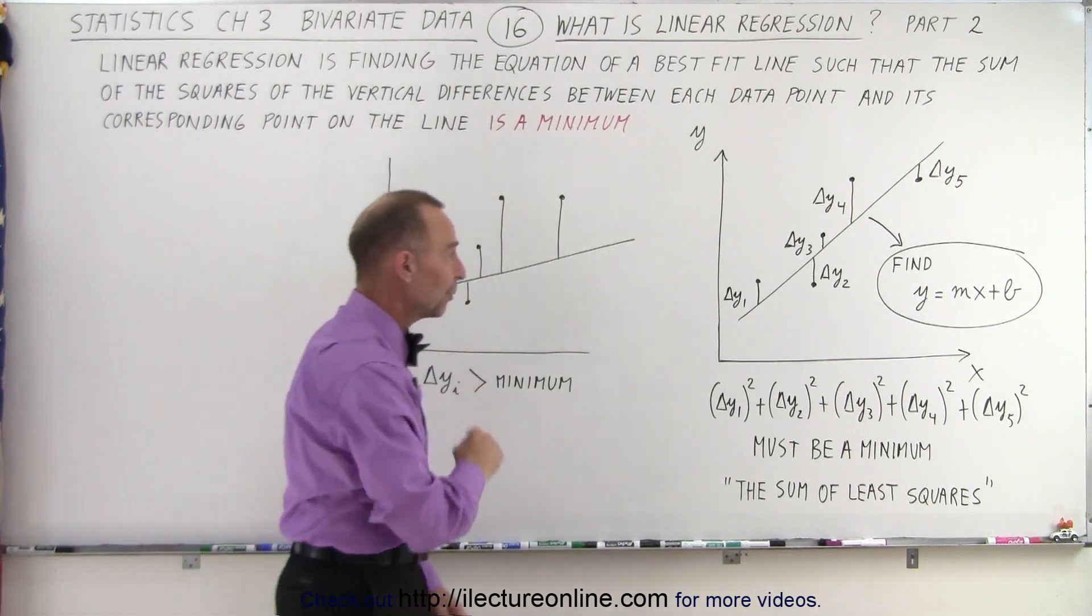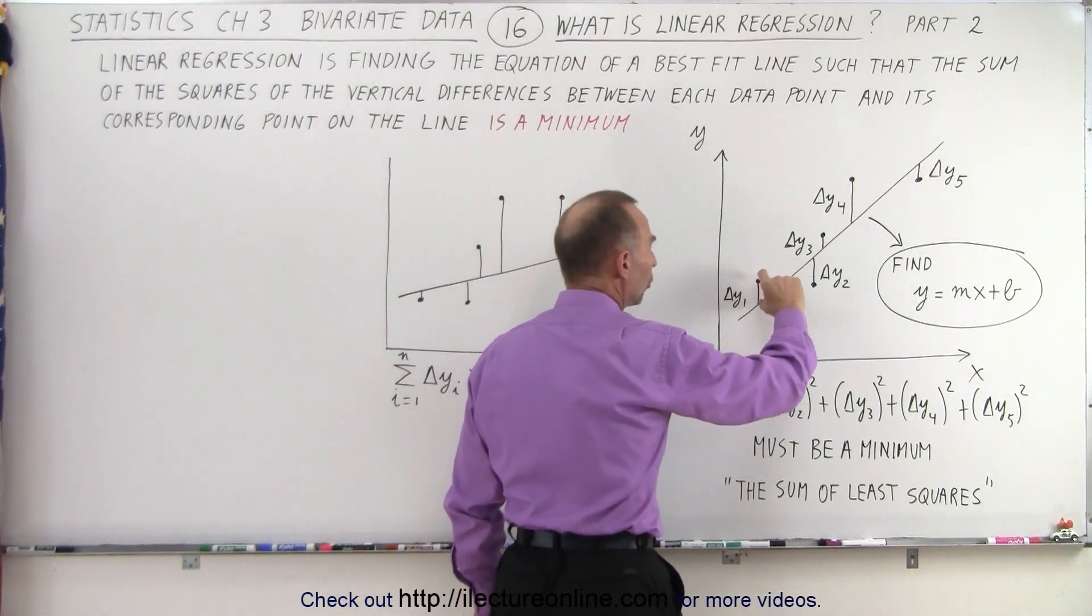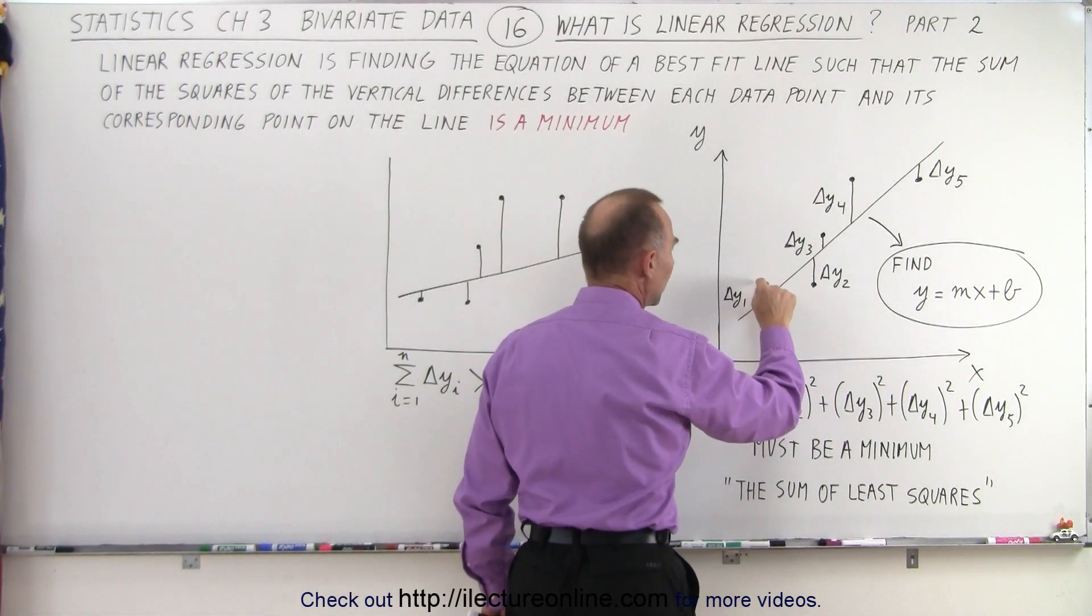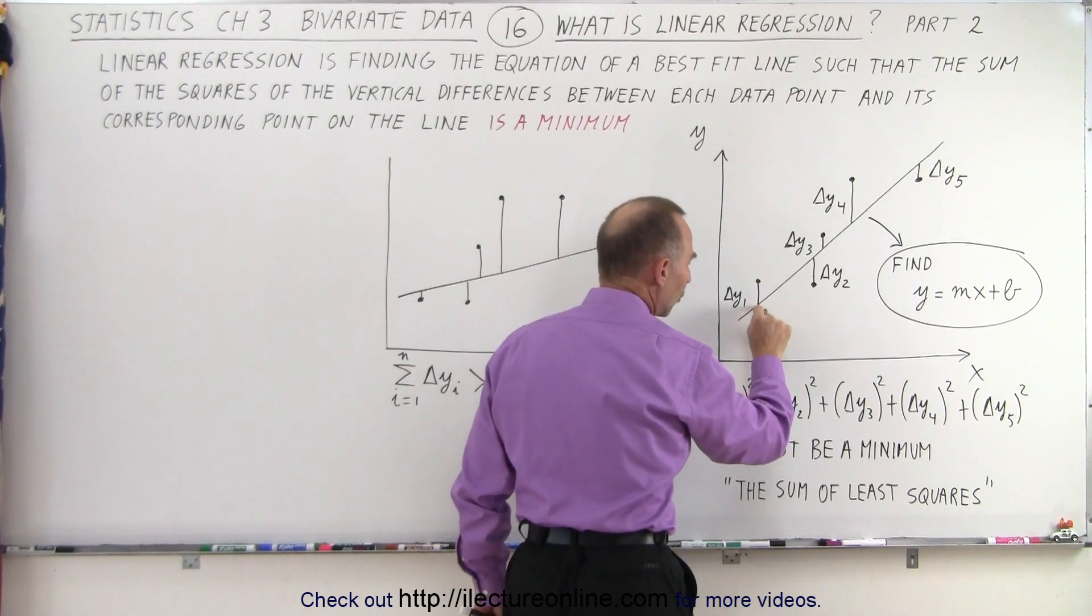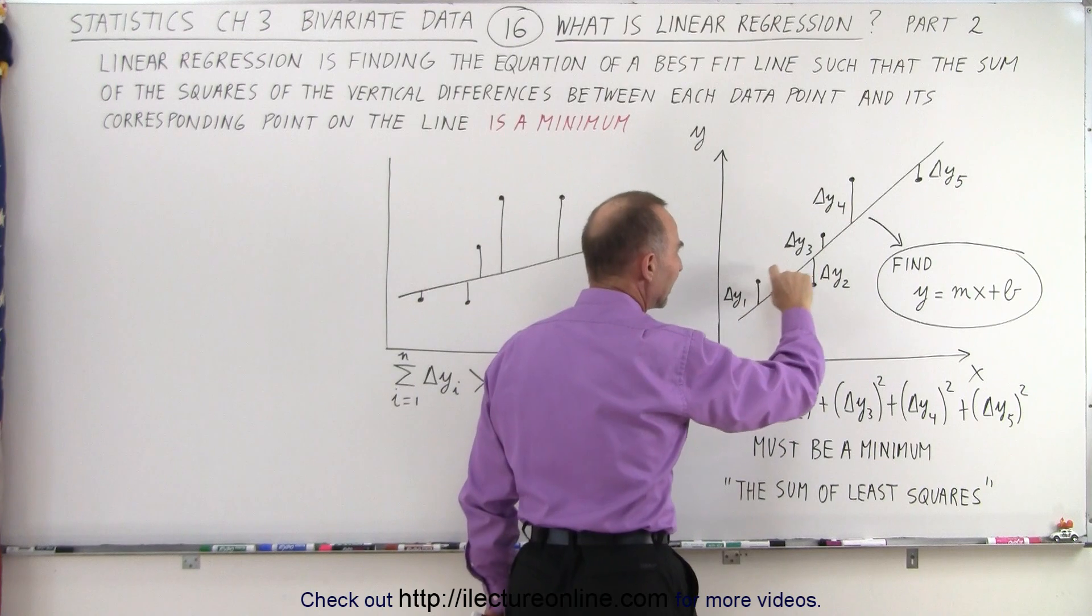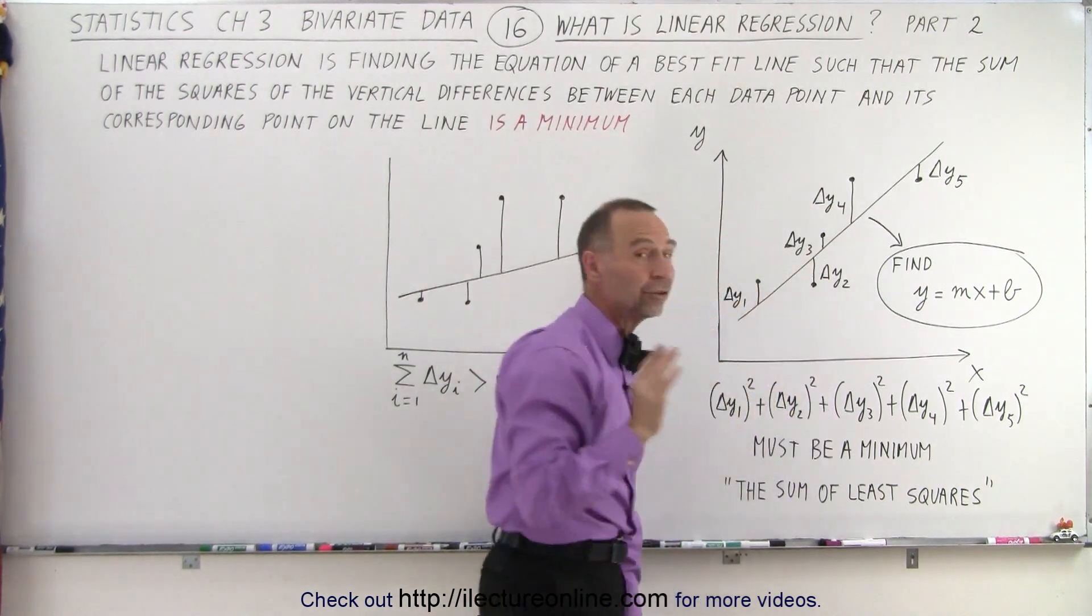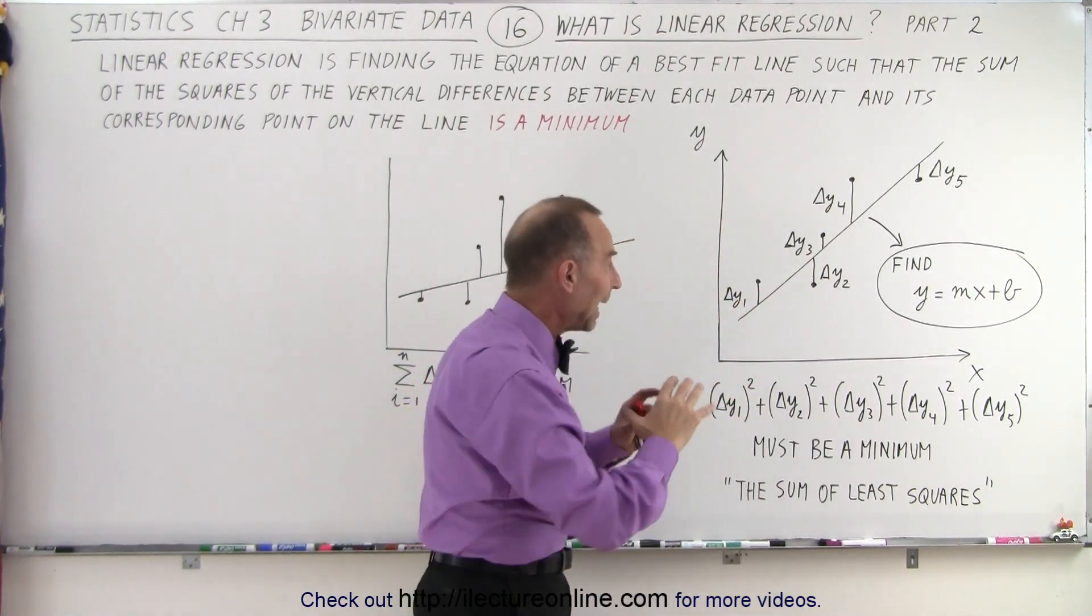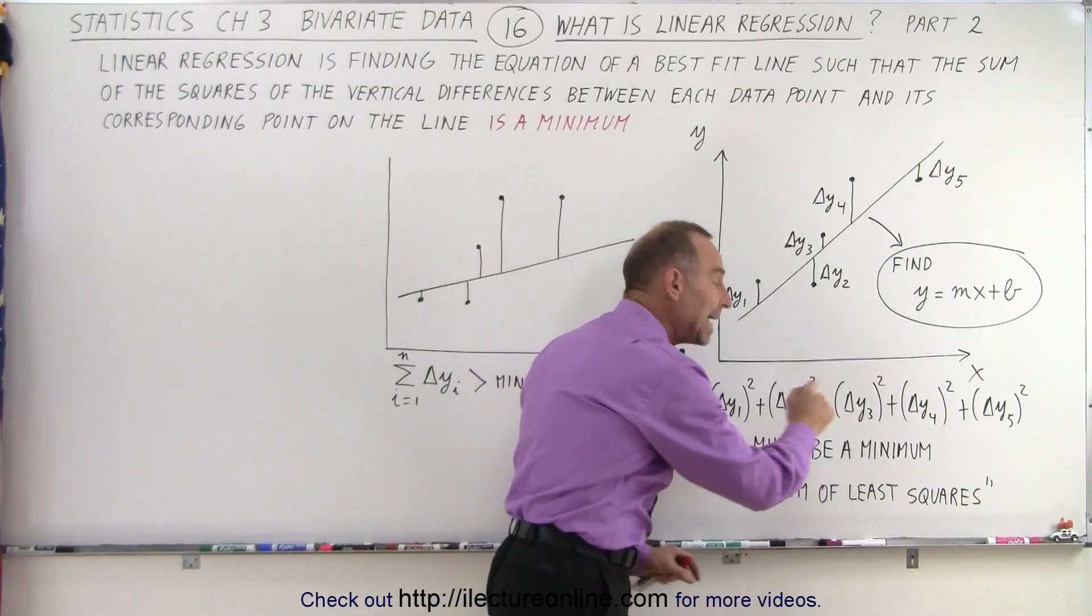So graphically, we have it right here. Notice these are all the vertical differences between the data point and the corresponding point on the line directly above or below the data point. So we take these distances, we square them, we sum them all up, and that sum must be a minimum.